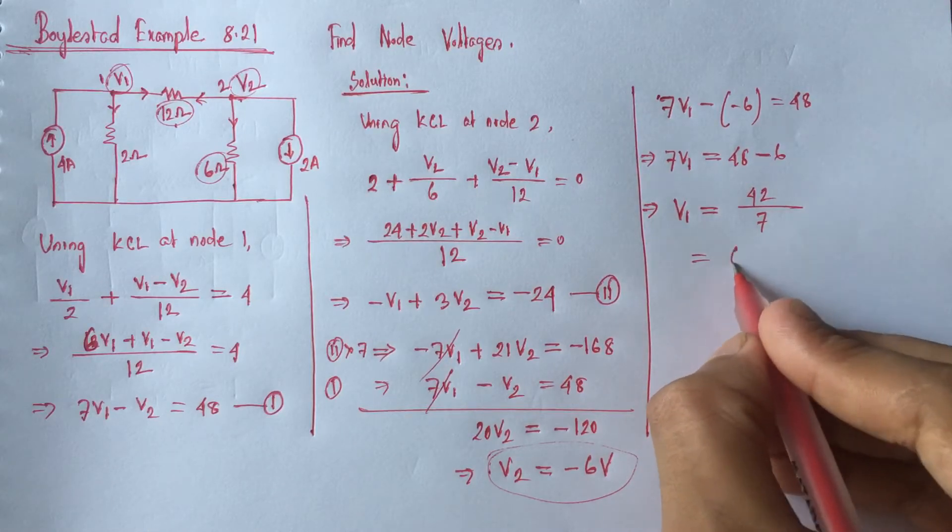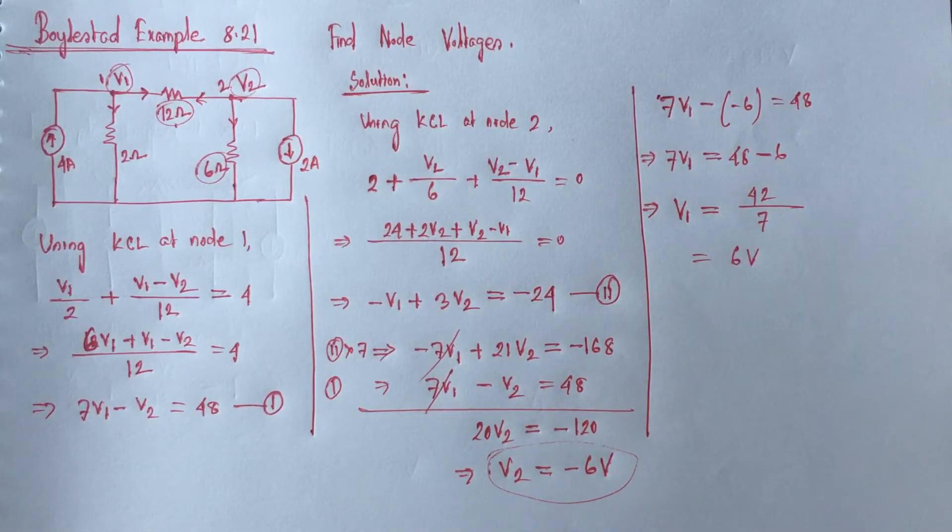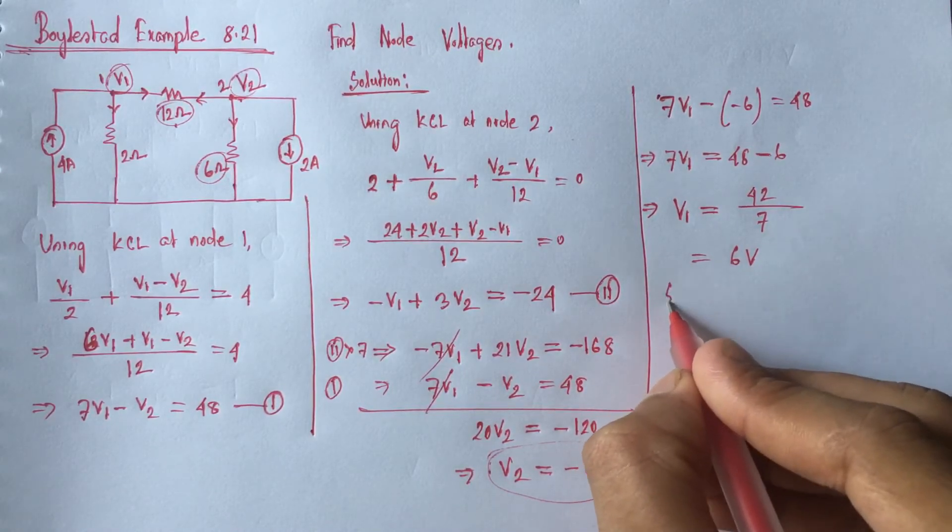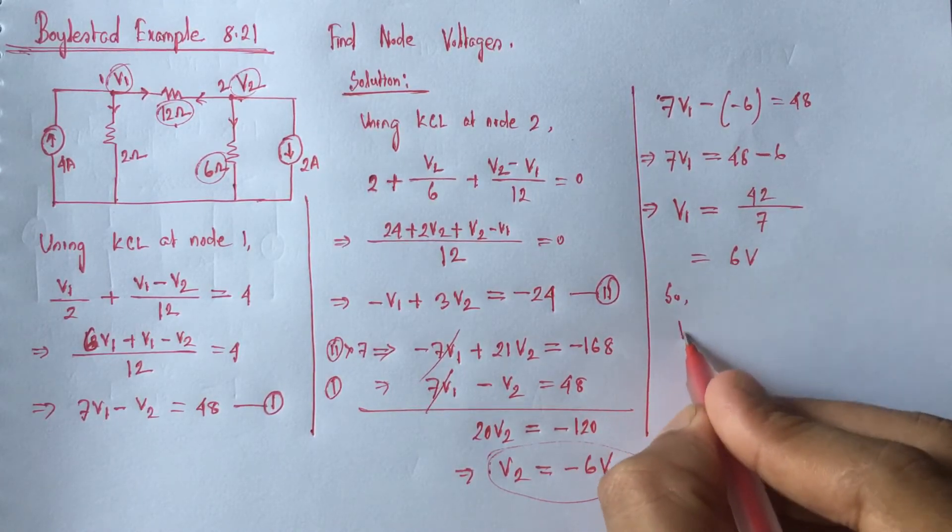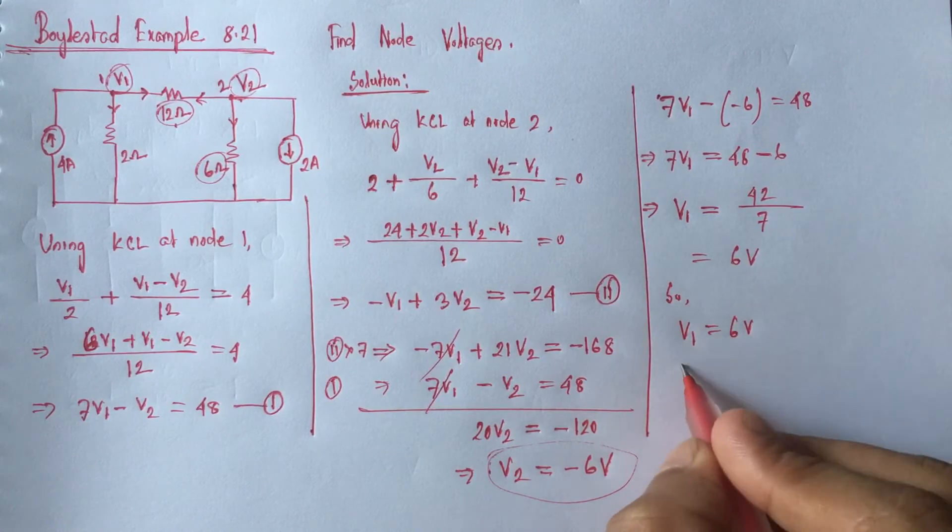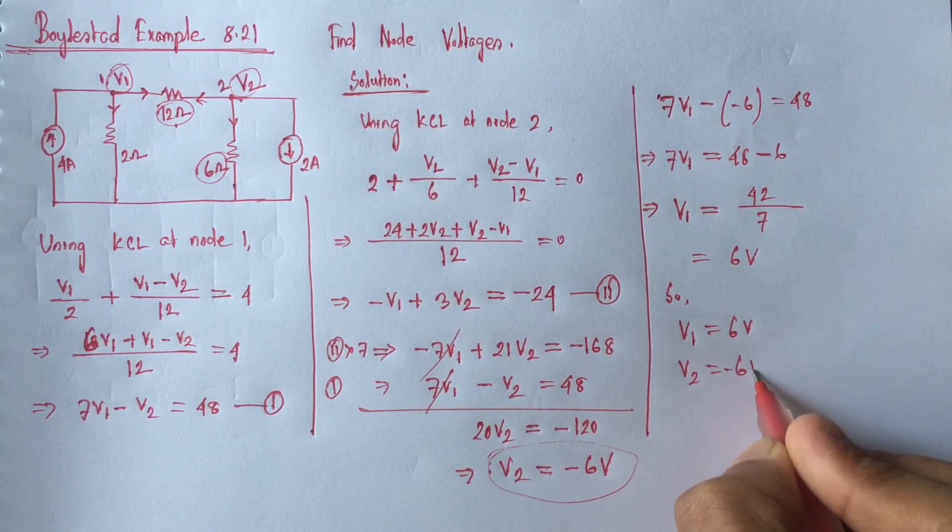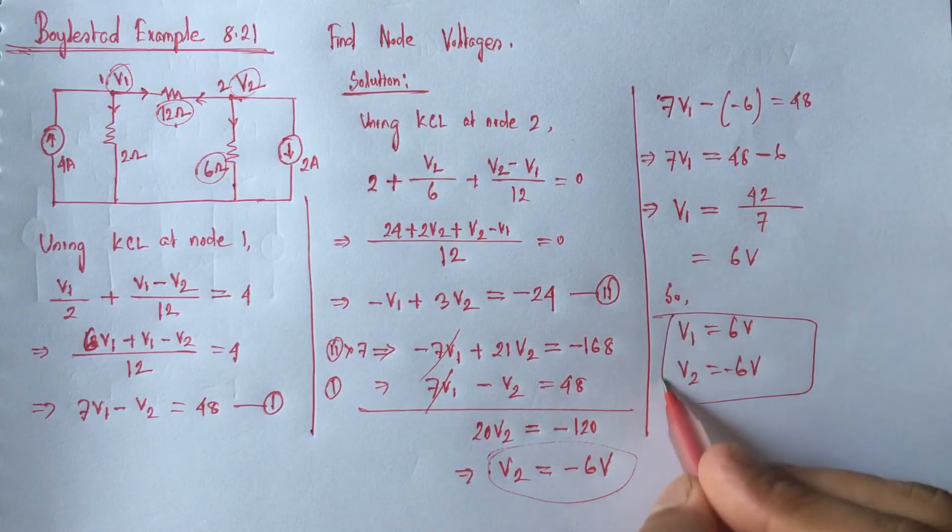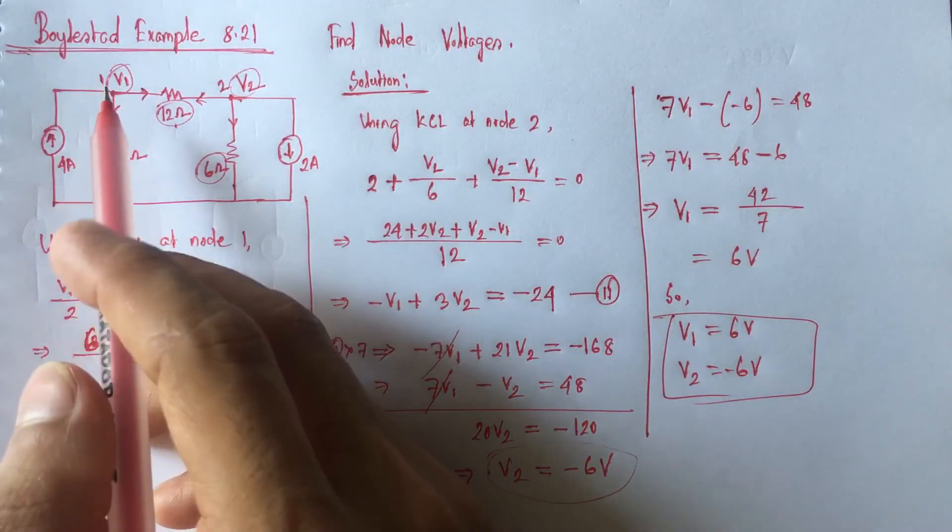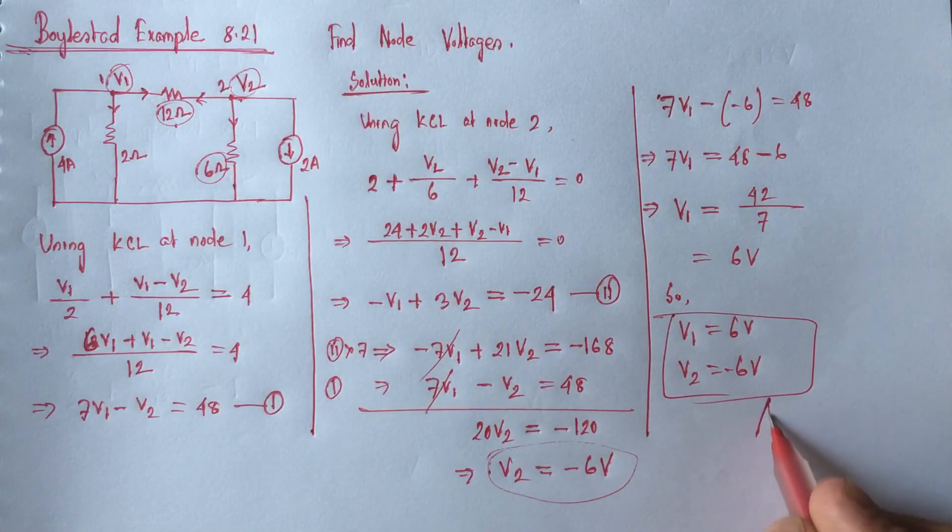This is 6 volt. Here we get V1 equals 6 volt, V2 equals minus 6 volt. These two voltages are node voltages for this circuit. These are the answer.